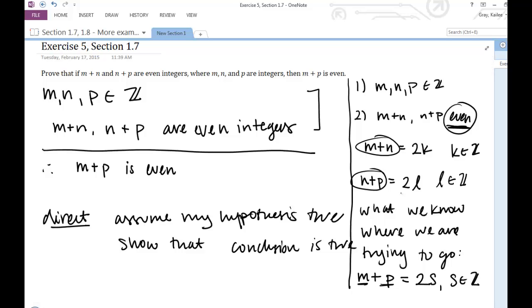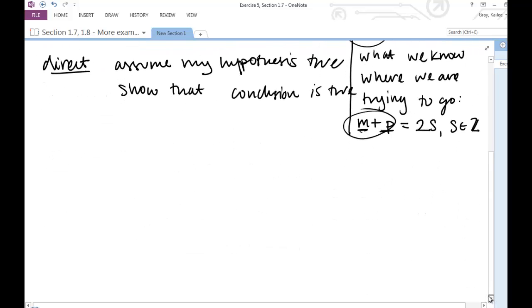So unfortunately, you have to be a little bit creative here. And you have to figure out how you can know something about m plus p using these two expressions. Let me try to write this one more way, and we can see if you see it. So we're trying to go from m plus n, n plus p, to conclude something about m plus p. So it's kind of like when you have two equations with two unknowns. When you have those two equations with two unknowns, you usually combine the two equations so that you can figure out something about your unknowns. And that's exactly what we're going to do here.